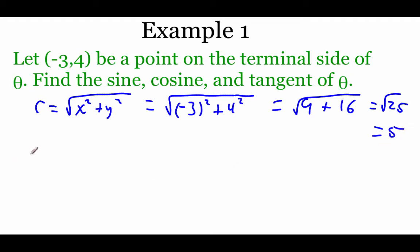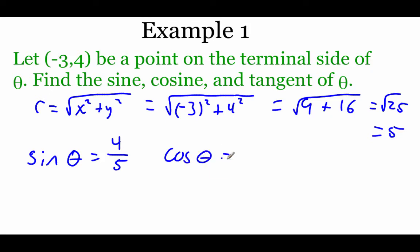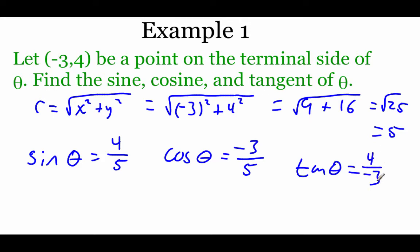Now finding our trig values: sine of theta is y over r, so 4 over 5. Cosine of theta is x over r, so negative 3 over 5. And tangent of theta is y over x, so 4 over negative 3.